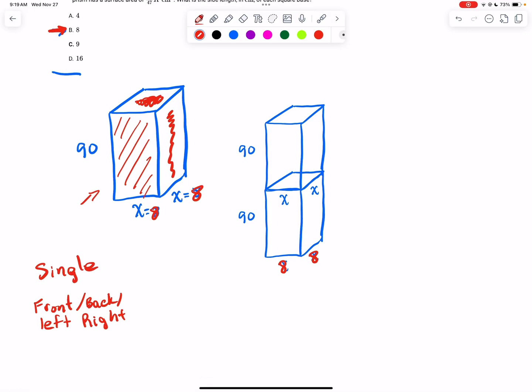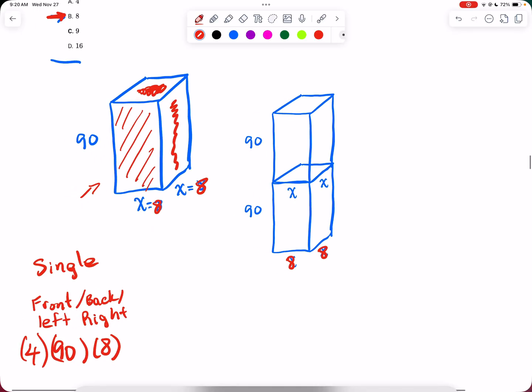The area of the front and the back and the left and the right - each one is going to be 90 times 8, but there's four of those, so we have to multiply by 4 to get the area of all four of those rectangles.